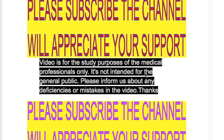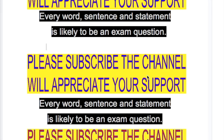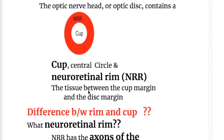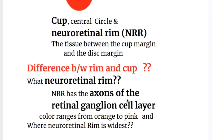In this video, we will discuss the neuroretinal rim and the optic cup — normal and abnormal features in the size of the optic disc and neuroretinal rim. The optic nerve head, or optic disc, contains a cup, a central circle, and a neuroretinal rim, which is another circle outside the cup. The neuroretinal rim has the axons of the retinal ganglion cell layers, whereas the cup does not have any visual receptors.